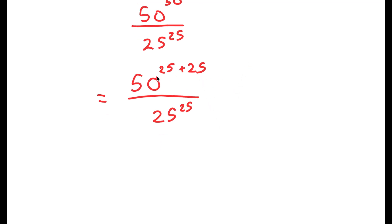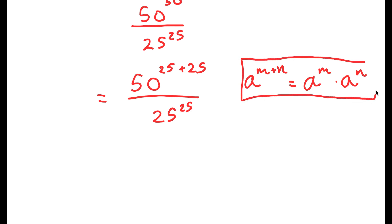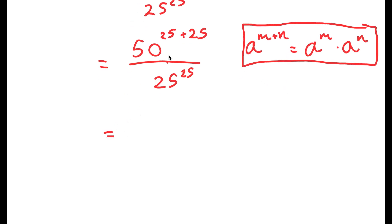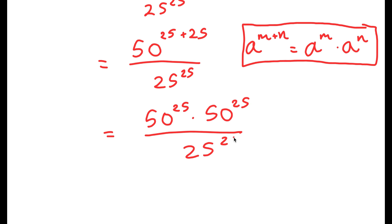The reason I rewrote 50 to the power of 50 as 50 to the power of 25 plus 25 is because I can use an exponential property: a to the power of m plus n equals a to the power of m times a to the power of n. I highly recommend you memorize this. So 50 to the power of 25 plus 25 turns into 50 to the power of 25 times 50 to the power of 25, all over 25 to the power of 25.